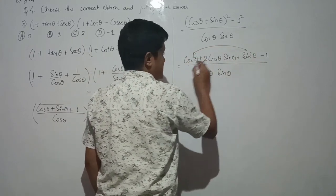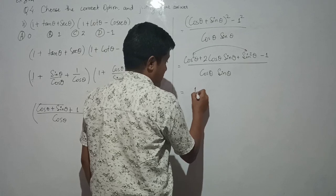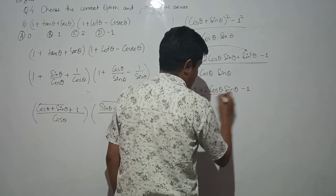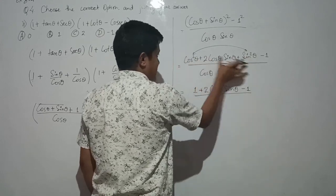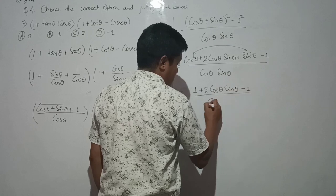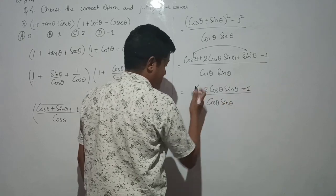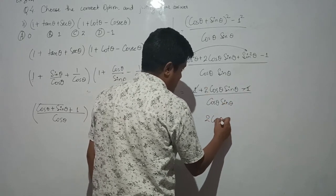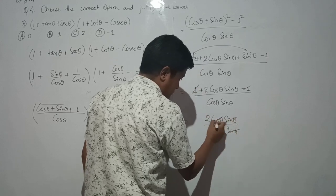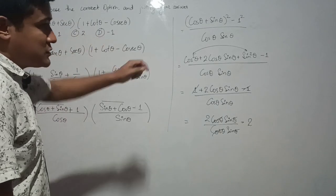The denominator is cosθ times sinθ. In the numerator, cos²θ + sin²θ equals 1, so it becomes 1 + 2cosθsinθ minus 1. The ones cancel, leaving 2cosθsinθ in the numerator. Dividing by cosθsinθ, the cosθsinθ terms cancel and we get 2.